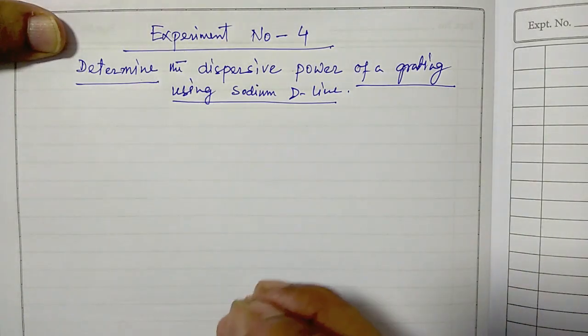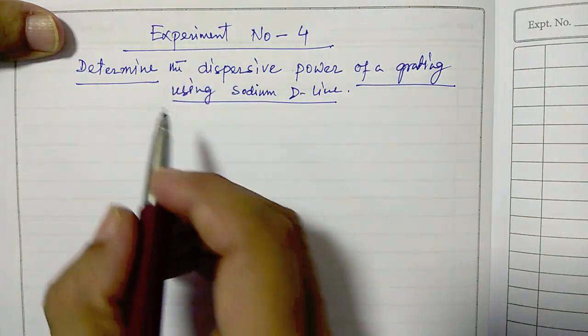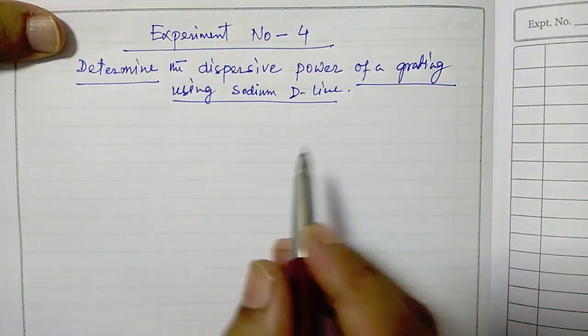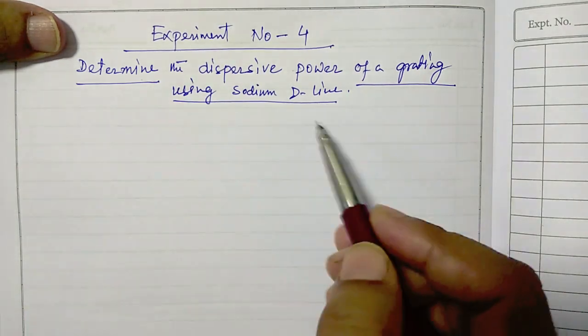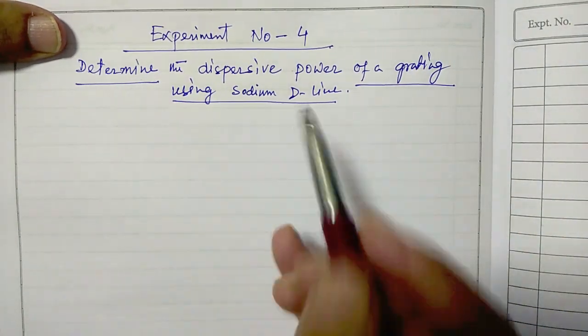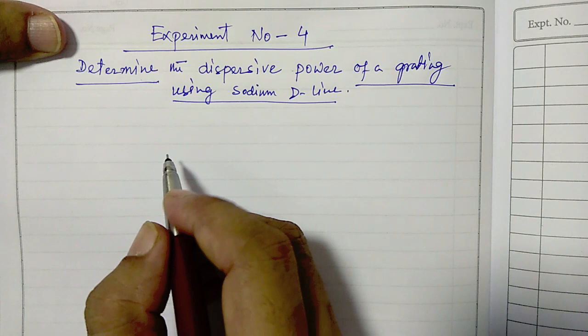So, in this part we are going to discuss a bit about the theory behind this experiment. What we are doing is trying to determine the dispersive power of a grating using sodium lamp or sodium light.